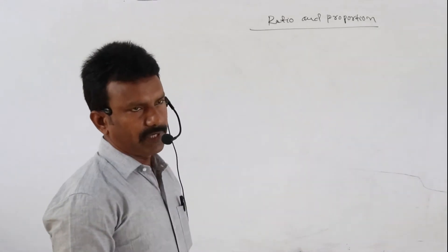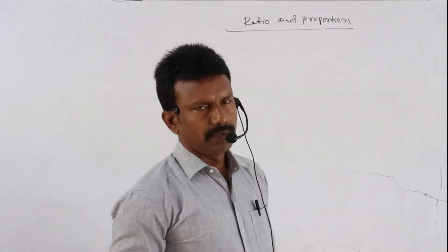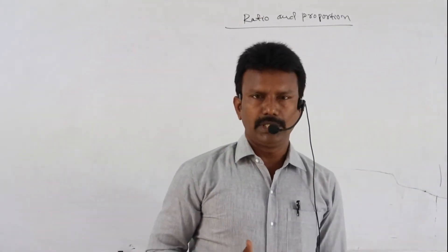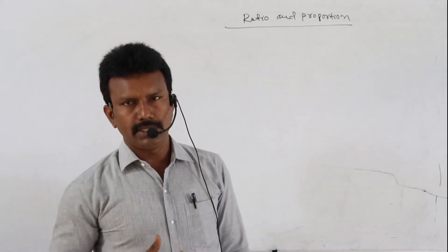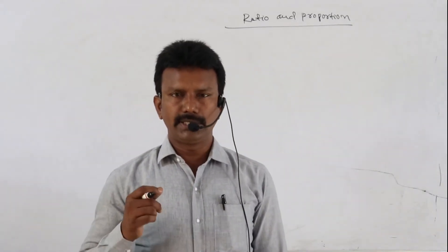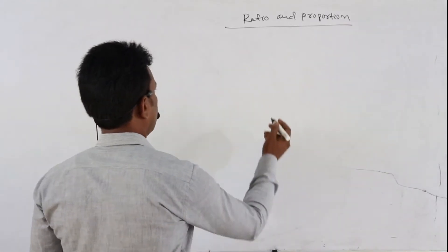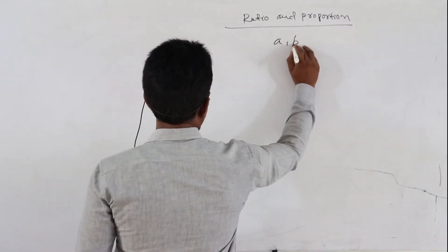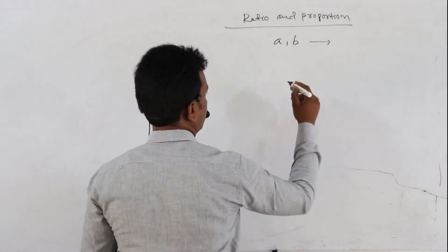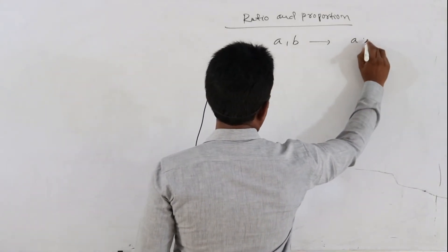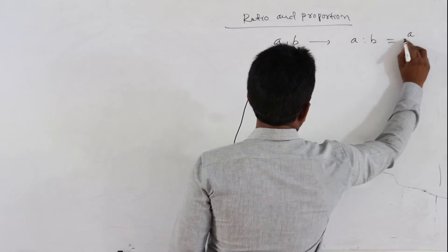So what is the meaning of ratio? Ratio is a comparison between two quantities. The quantities are in the same units. Maybe our quantities are A and B.